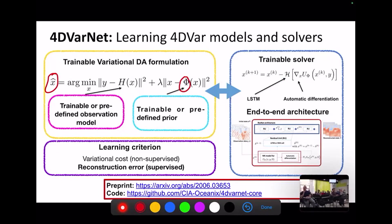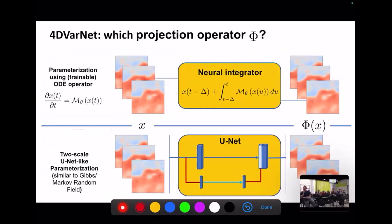Coming back to the question: we may have different choices for setting operator phi. The most natural one, if you know the dynamics, is to implement time integration — for example, an Euler solver or a Runge-Kutta solver. Alternatively, you can use a neural architecture. In our case I use a U-Net, which is a type of CNN with multi-scale decomposition.